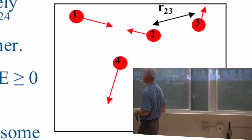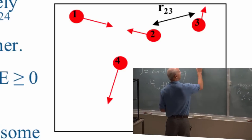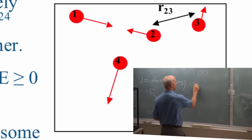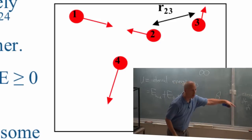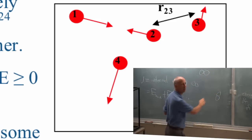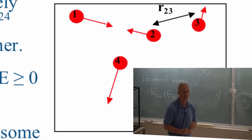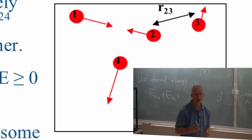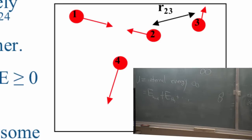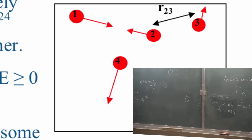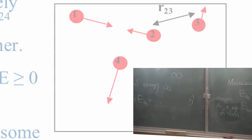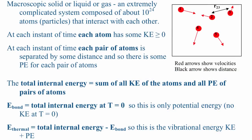What about a diatomic ideal gas? The molecules are moving, but are potential energies ignorable? No, because some atoms are stuck together — some are close. So for a diatomic ideal gas, we're going to have to think about chemical bonds, and our thermal energy is going to include potential energies whenever there are bonds.